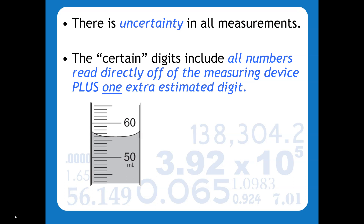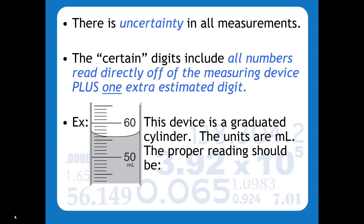So for example, this is a graduated cylinder and upon reading this we would say the unit would be milliliters. When we're reading this, I think from person to person we would all agree that it's definitely 56 something milliliters. We are reading every digit that we can off of this device and then according to our rules we have to estimate one more. This is all split up into ones, so since the bottom of the meniscus is right at 56, that's where the 56 comes from. But we need to estimate one more, so that's why we would have to estimate to the tenths place.